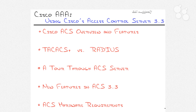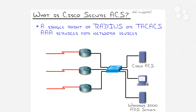Anytime you come to a new product name you have to ask: what is the Cisco Secure Access Control Server, or ACS? Cisco Secure ACS is a single point of RADIUS or TACACS AAA services for network devices. That's straightforward and concise, but the problem is you're probably seeing a bunch of terms that make no sense — RADIUS, TACACS, triple-A. What are all these things?